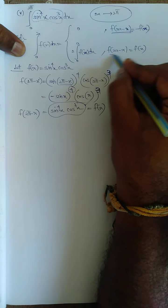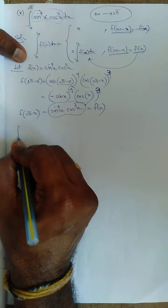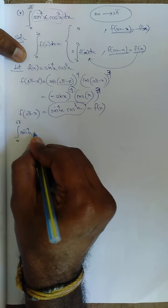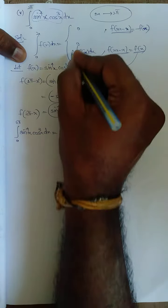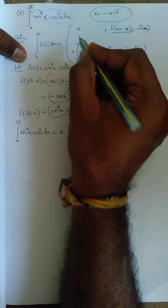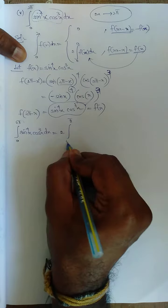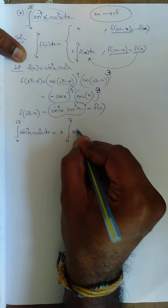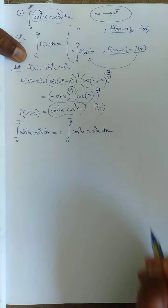Since f(2a - x) = f(x), we apply the property: ∫₀²π sin⁴x · cos³x dx = 2 · ∫₀π sin⁴x · cos³x dx. Here 2a = 2π so a = π, giving us the new upper limit of π. We now need to evaluate 2∫₀π sin⁴x · cos³x dx.